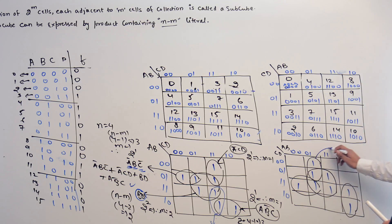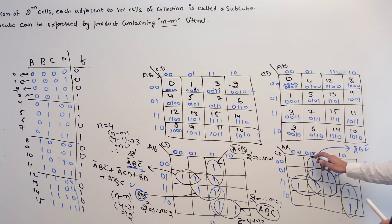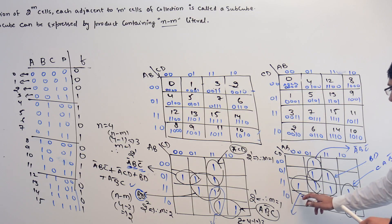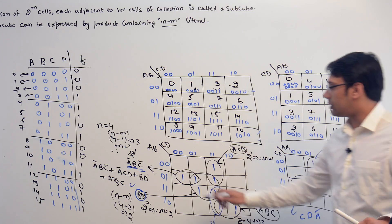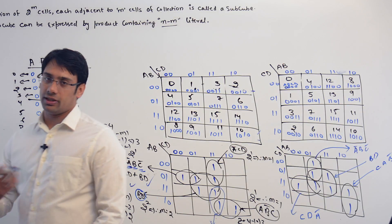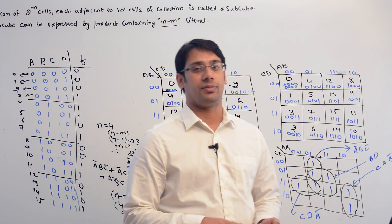You can clearly see that each cell is representing the same thing — A complement B C complement, BD, AB complement C, and A complement CD — and you still get the same solution. Let me take one more example of a K-map, and then we will discuss what are implicants, what are prime implicants, and what are essential prime implicants.